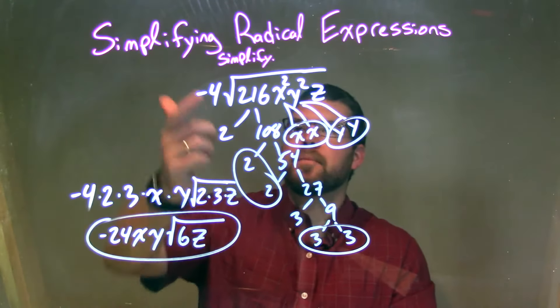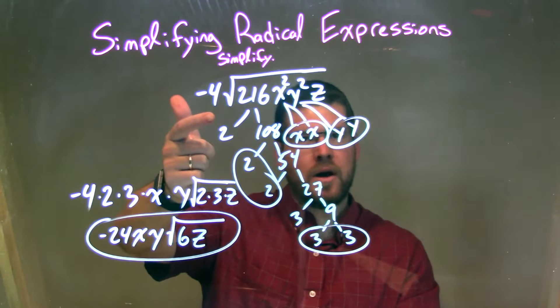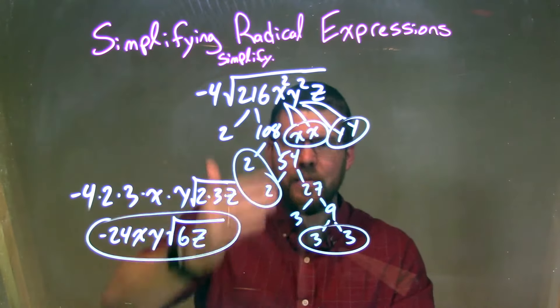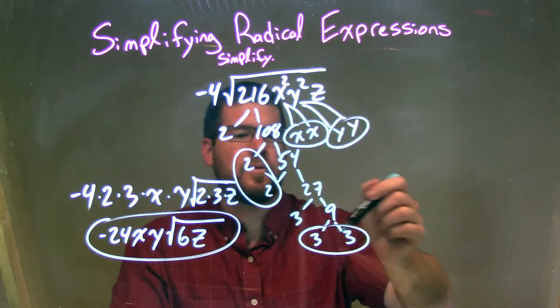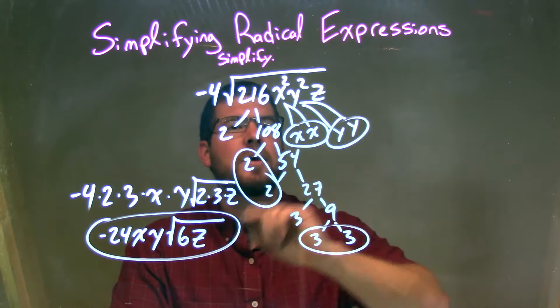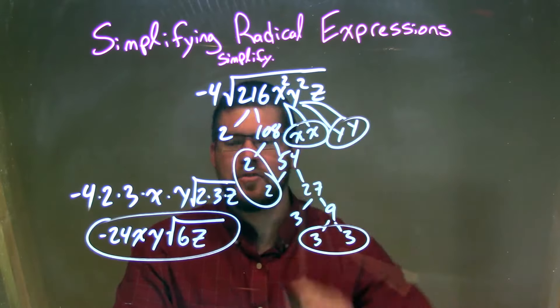So let's recap. We're given negative 4 times the square root of 216 x squared, y squared, times z. That breaks down here. 216 breaks down to be 2 times 3 times 2 times 3 times 3 times 3. And x squared, 2 x's. And y squared, 2 y's. And z is just by itself.